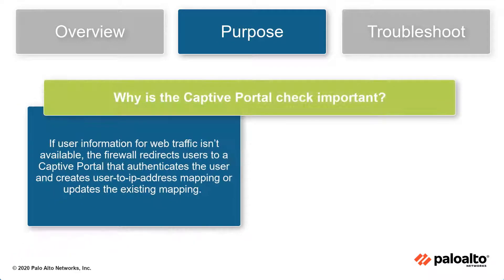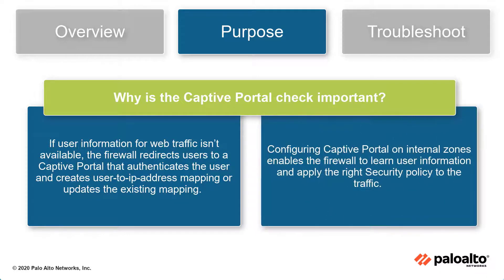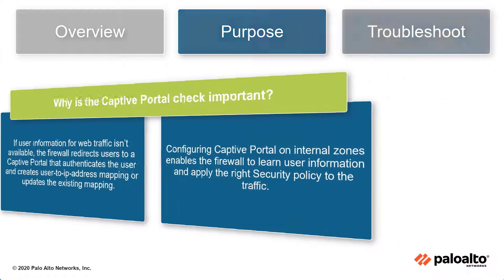If user information for web traffic isn't available, the firewall redirects users to a Captive Portal that authenticates the user and creates a user-to-IP address mapping, or updates the existing mapping. Configuring Captive Portal on internal zones enables the firewall to learn user information and apply the right security policy to the traffic.